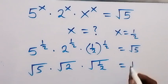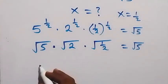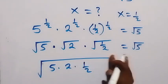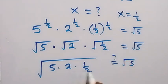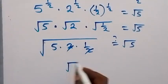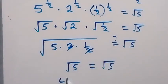Is this equal to root 5? Since when we multiply square roots we can bring the numbers under one square root, we have the square root of 5 times 2 times one half. The 2 and the one half cancel out, leaving 5 times 1 which is 5. So we have root 5 equals root 5 — left hand side equals right hand side.